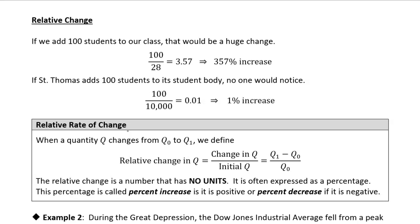If we added 100 students to the student body, if we started out with 10,000 students at the University of St. Thomas, and we added 100 students, then the change in the quantity is 100 divided by the initial quantity, which would be the initial student body was 10,000 students, and that's just a 1% change.